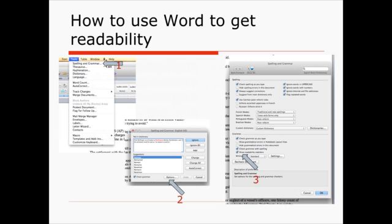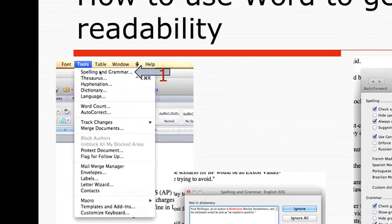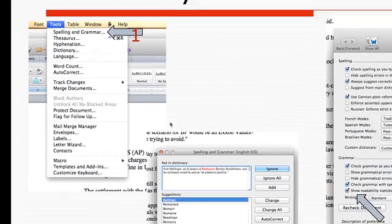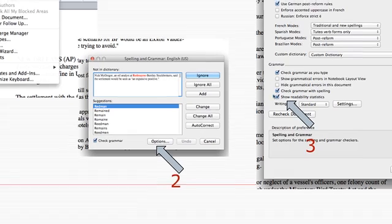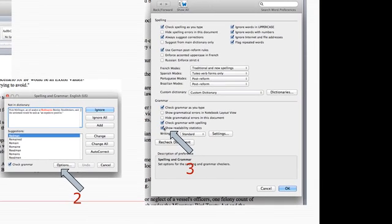How do you use Word to get a readability score? Well, first, under Tools, Spelling and Grammar, choose this when you have your text selected. Up will pop a dialog box and use the Options. Under Options, click Show Readability Statistics.